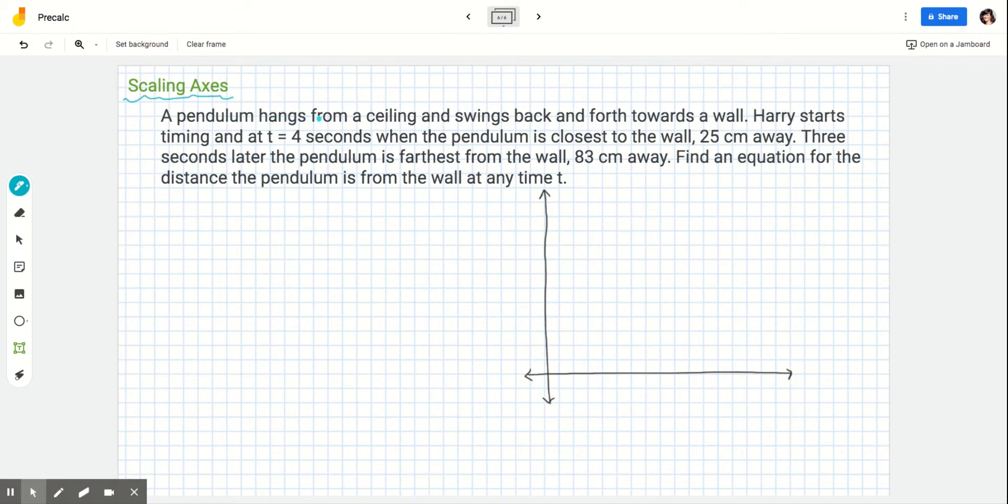In this scenario, a pendulum is hanging from a ceiling and it's swinging back and forth towards a wall. Harry starts timing at t equals 4 seconds when the pendulum is closest to the wall at 25 centimeters away. Then 3 seconds later, it is at 83 centimeters away.